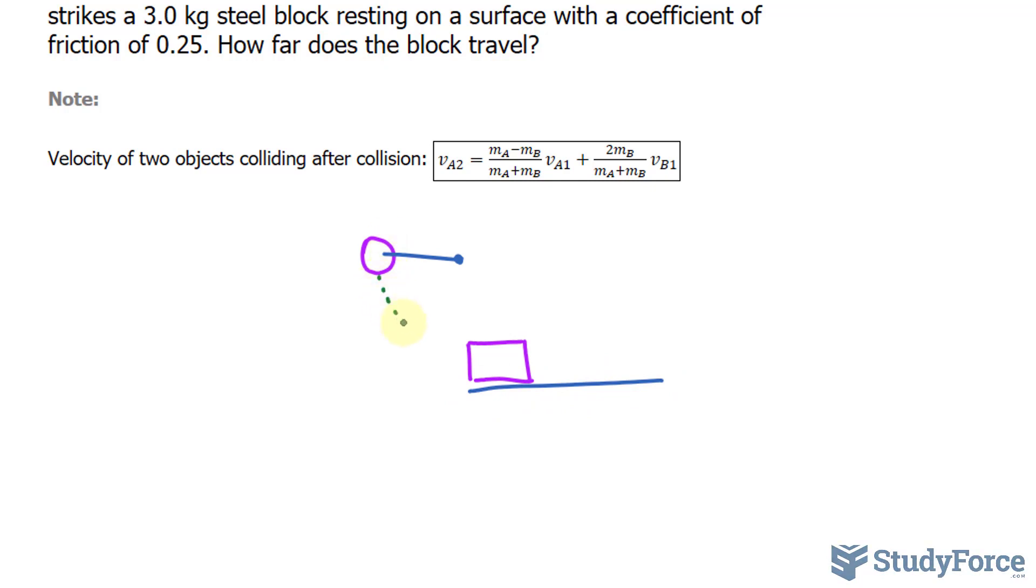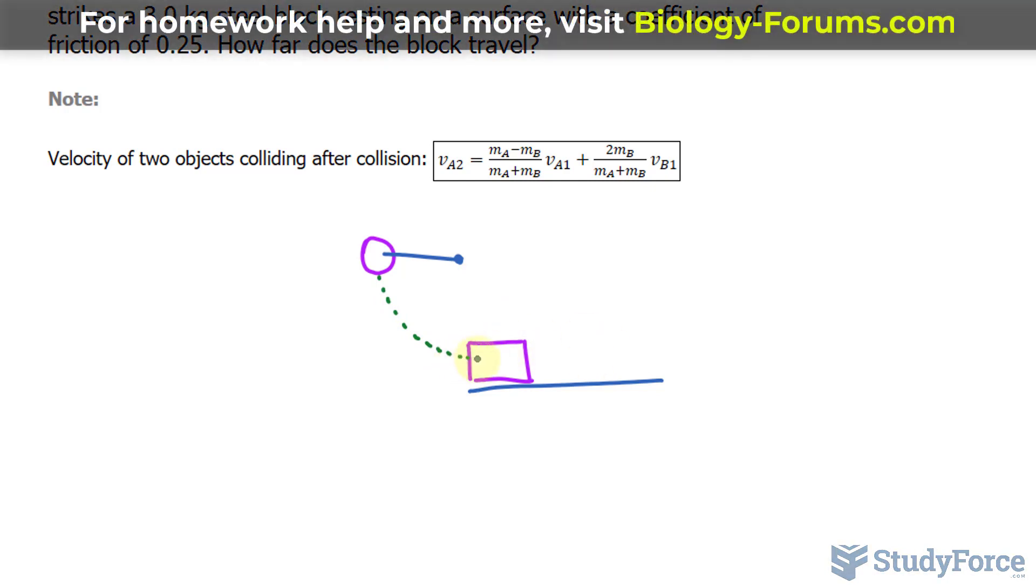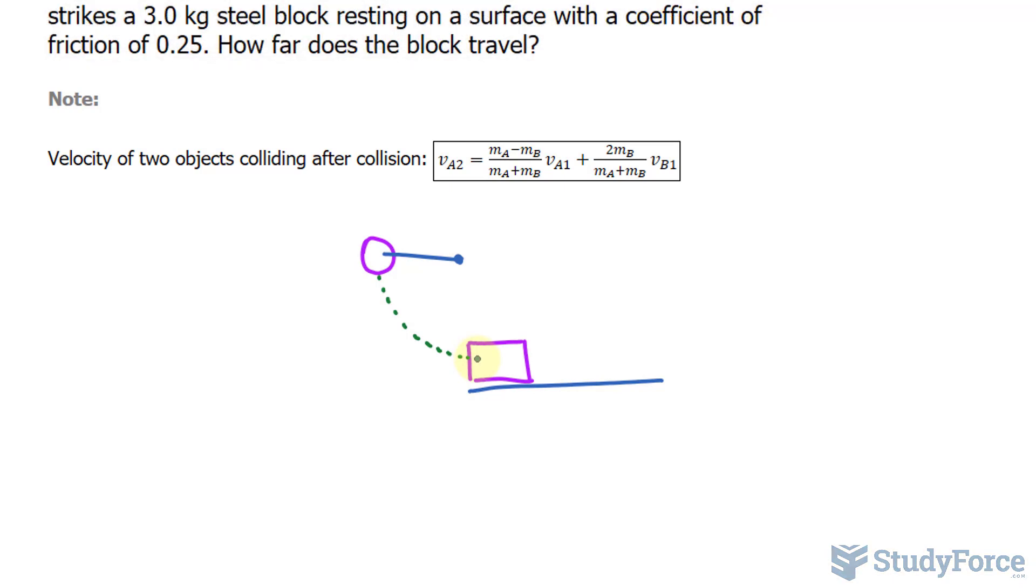So when this gets released, it hits this block. And this block, which is currently at rest, will begin to move due to the impact. Now there's a lot to this problem. First, we need to keep in mind the conservation of momentum. We need to keep in mind potential energy and kinetic energy. And the formula that I've shown here, which relates the velocity of two blocks colliding after a collision, especially one that is elastic.